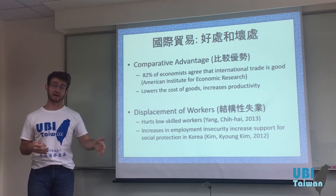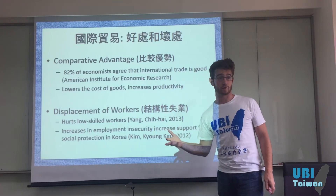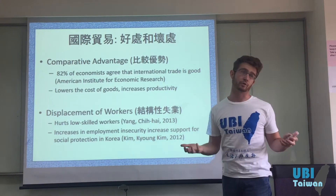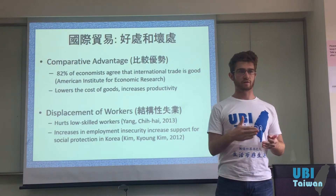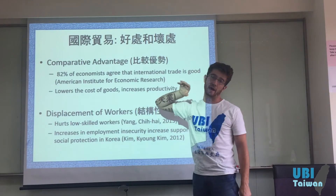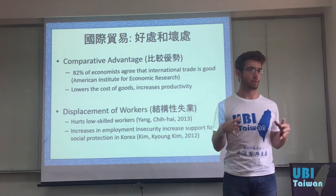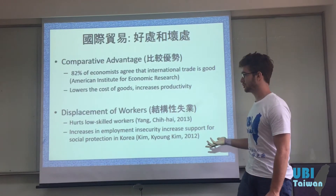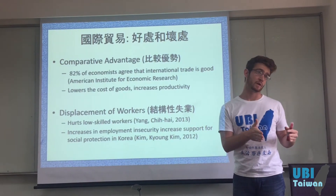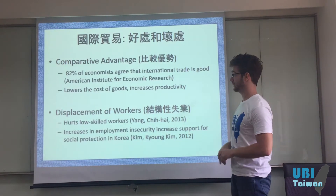There are certain losers to trade, just as there are winners. In a lot of cases, factory workers are the most vulnerable, because things like textiles — like jeans, for example — can be produced best in places with very cheap labor. Comparative advantage is not just about which areas have the best resources, but also what their labor market is like. Research has shown that low-skilled workers were most likely to lose their jobs when trade increased.